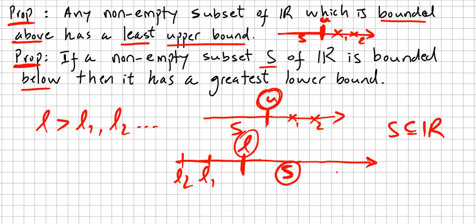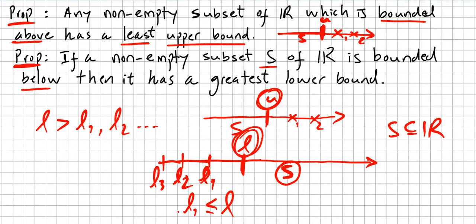Let us say this is the point where the set is bounded. L1, L2, L3 will all be lower bounds, but there will be one that is the greatest lower bound. So L will be greater than L1, L2, L3. The proof for this one is exactly the same as the proof for Proposition 1 — you just make a set and pick the elements with a minus sign. It's very easy.